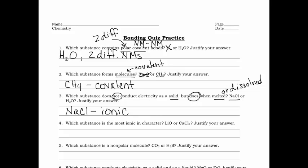Question four: which substance is most ionic in character? They're asking which one has the greatest electronegativity difference. It would also have the highest boiling point and melting point. To figure that out, we need to look up the electronegativities using Table S, so I'll pull that in.